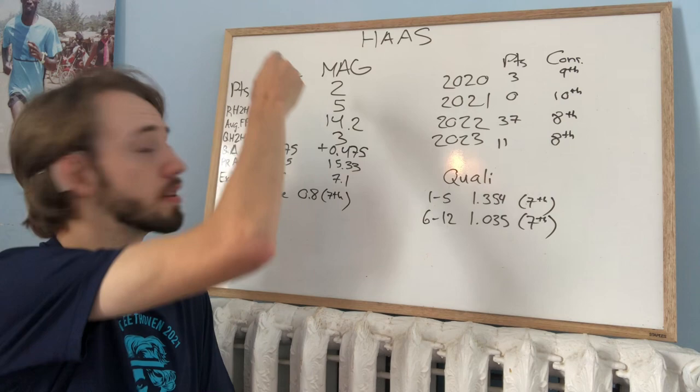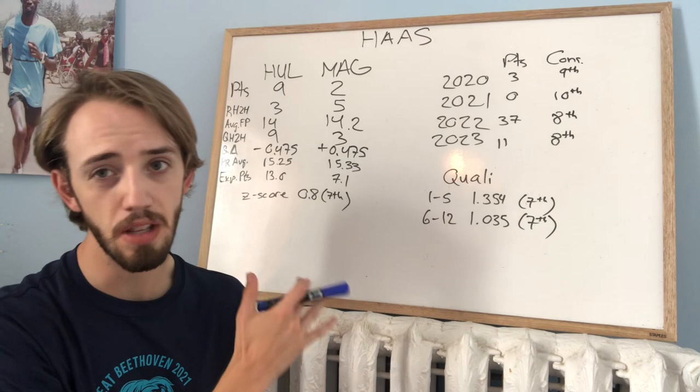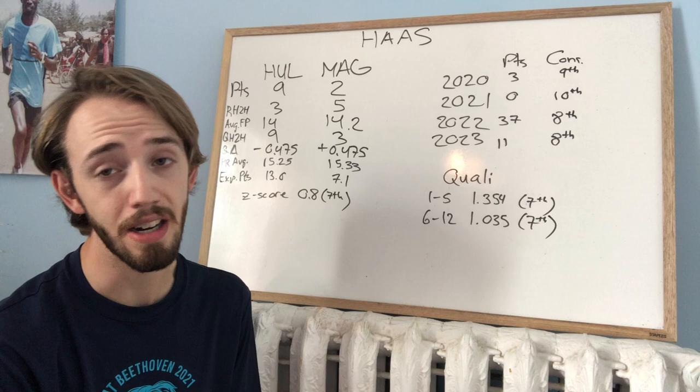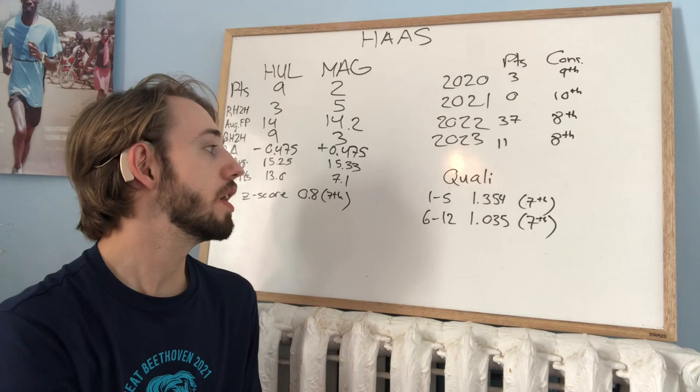So that's really showing the big discrepancy between the expected points and their actual points. Z-score is 0.8, so not that big, so 7th biggest gap between teammates, which means it's the 4th smallest gap between teammates. So fairly close between them in the races, but Hulkenberg has decidedly been ahead over the course of the year.